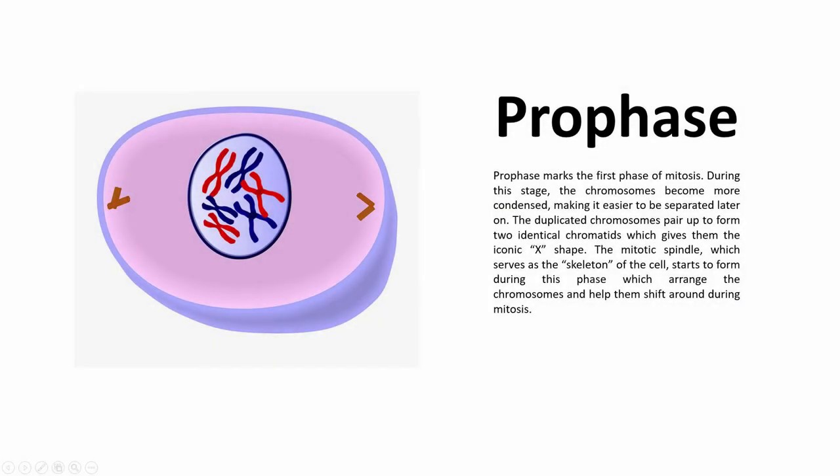Prophase marks the first phase of mitosis. During this stage, the chromosomes become more condensed, making it easier to be separated later on. The duplicated chromosomes pair up to form two identical chromatids, which gives them the iconic X shape. The mitotic spindle, which serves as the skeleton of the cell, starts to form during this phase, arranging the chromosomes and helping them shift around during mitosis.